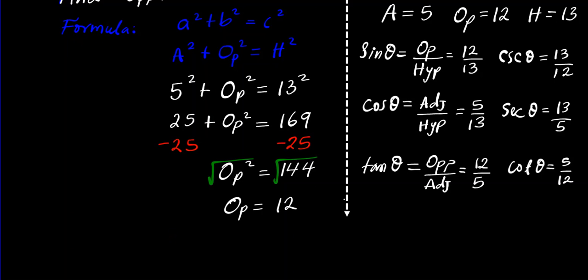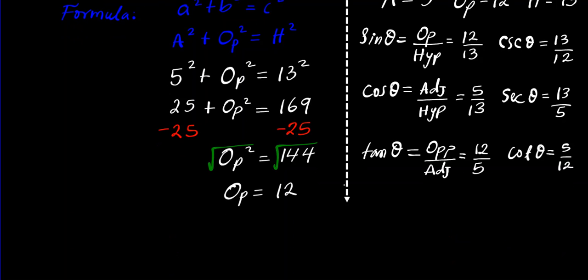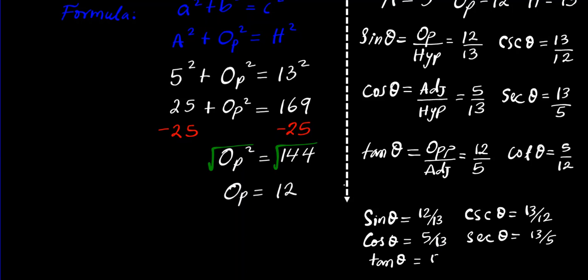To finish this problem we're going to organize all our answers. We have sin θ = 12/13, which follows that its reciprocal csc θ = 13/12. Cos θ = 5/13, which follows that its reciprocal sec θ = 13/5. Tan θ = 12/5, which follows that its reciprocal cot θ = 5/12. There goes our final answer.